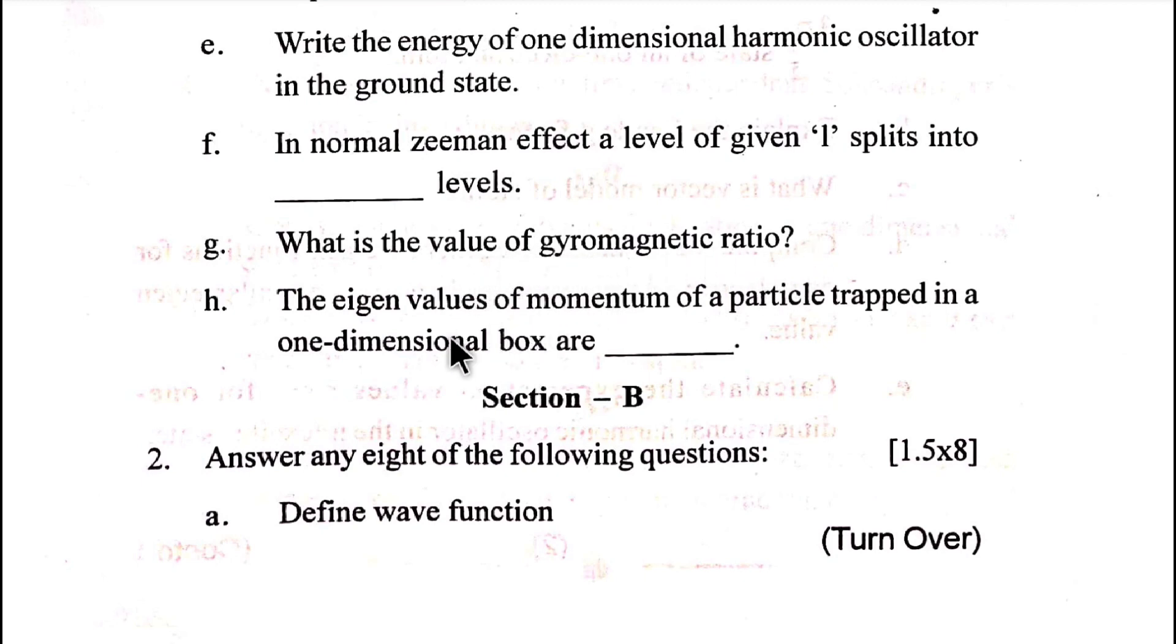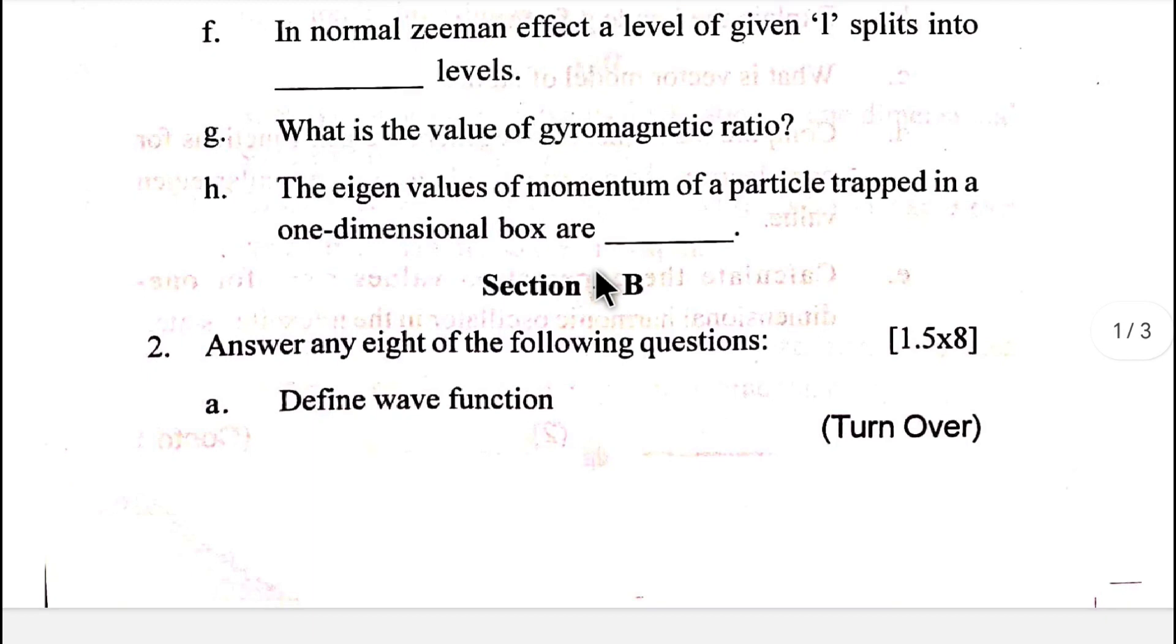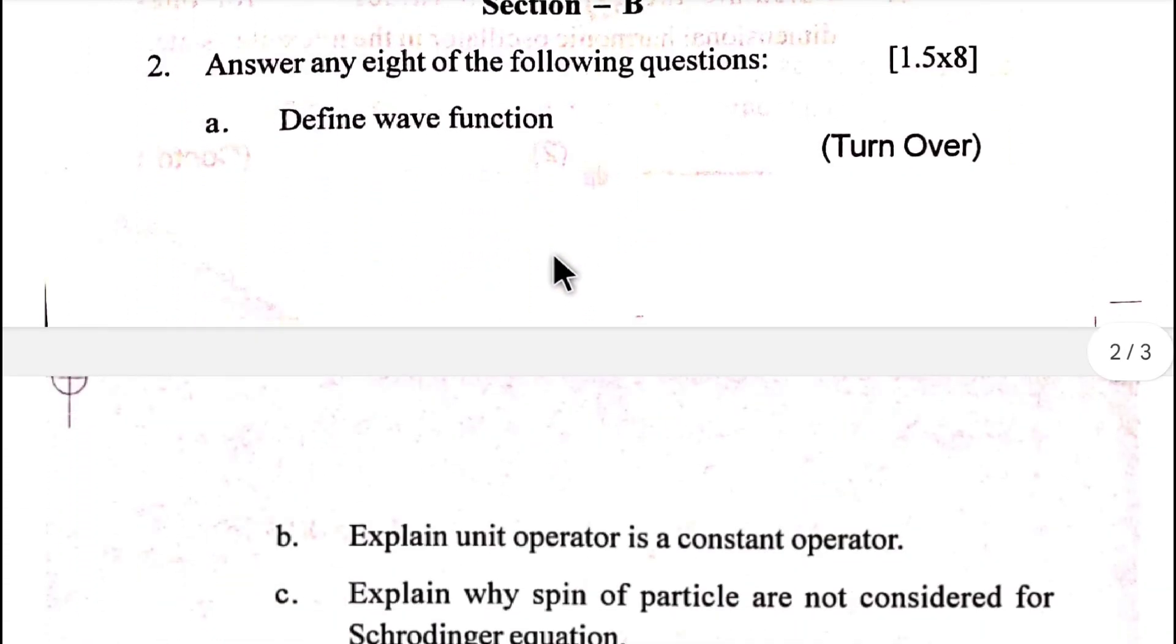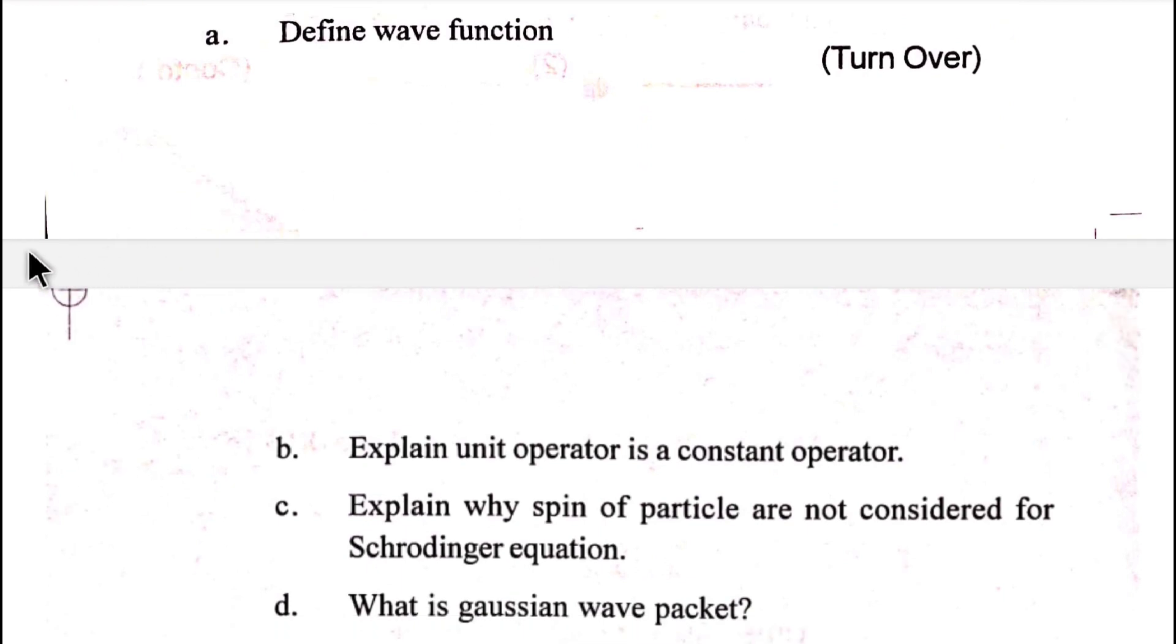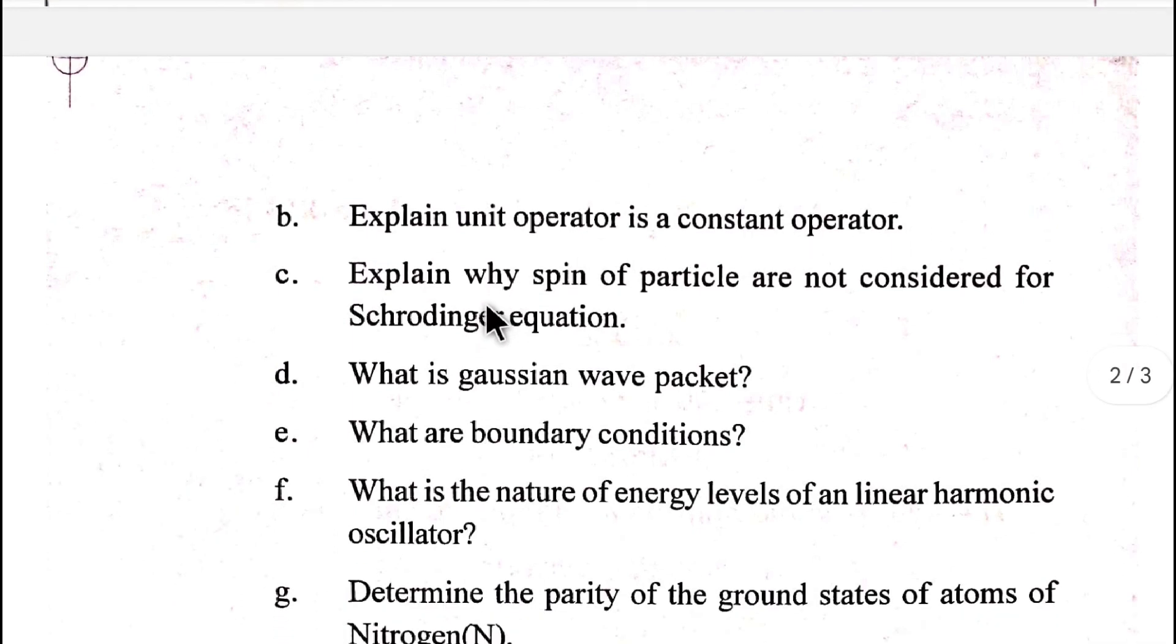The eigenvalues of momentum of a particle trapped in a one-dimensional box are dash. Number two: define wave function. Explain unit operator as a constant operator. Explain why spin of particle are not considered for Schrödinger equation.